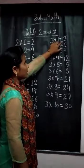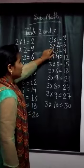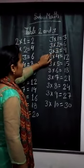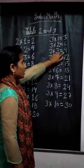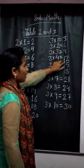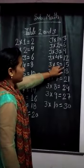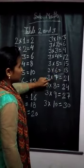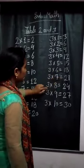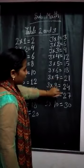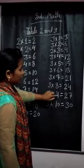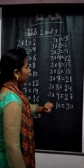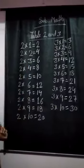3 times 1 is 3. 3 times 2 is 6. 3 times 3 is 9. 3 times 4 is 12. 3 times 5 is 15. 3 times 6 is 18. 3 times 7 is 21. 3 times 8 is 24. 3 times 9 is 27. 3 times 10 is 30. Thank you.